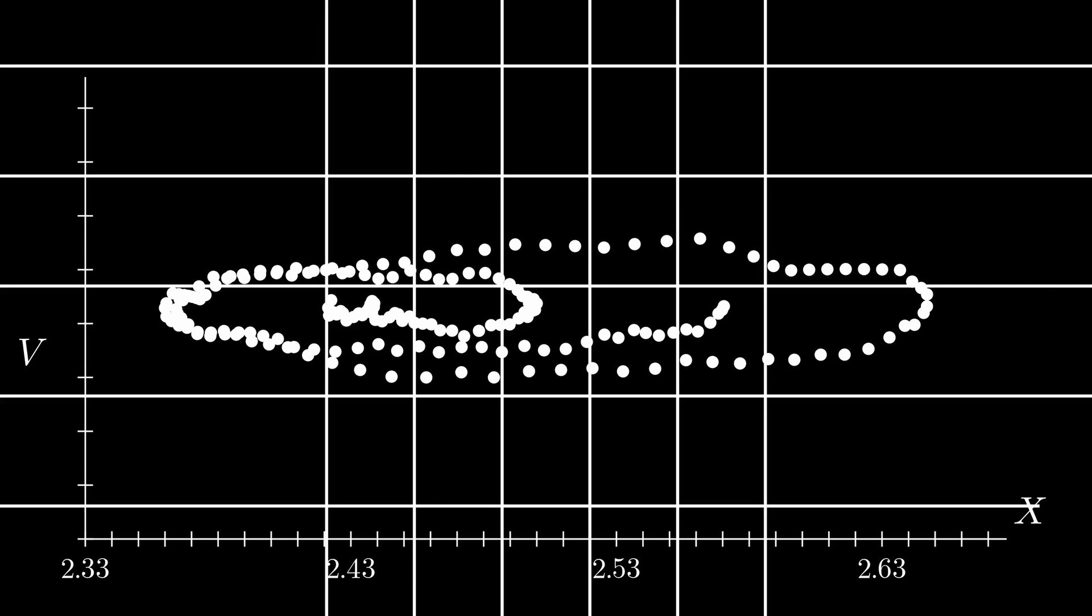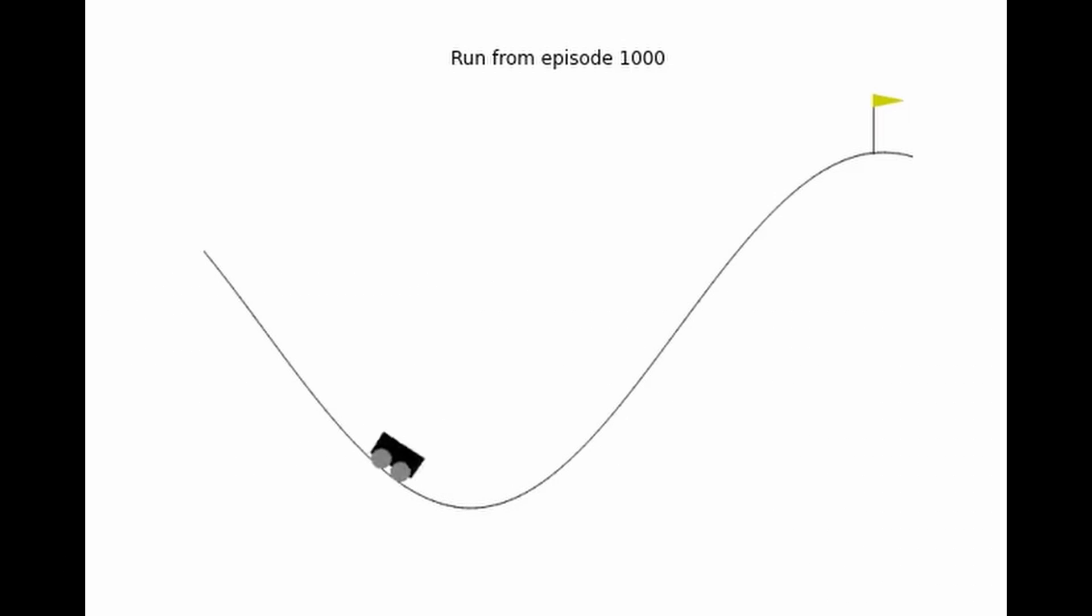We incorporate the q values by using the tiling method. Each of the squares you see on the screen gets assigned a q value. Once we do that and allow the agent to learn over a long enough period of time, is how we get the solution to the mountain car problem.